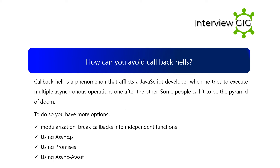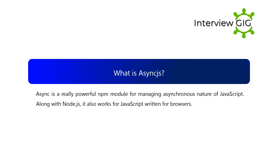How can you avoid callback hell? Callback hell is a phenomenon that afflicts a JavaScript developer when trying to execute multiple asynchronous operations one after the other — some people call it the pyramid of doom. To avoid it, you have options: modularization by breaking callbacks into independent functions, using async.js, using promises, or using async/await.